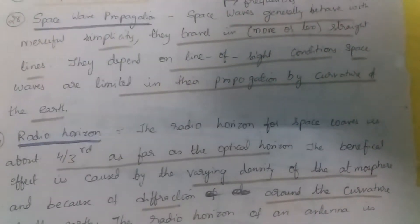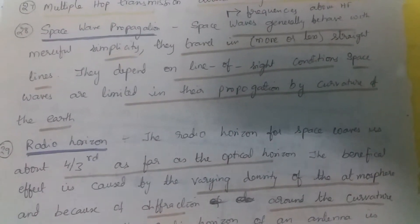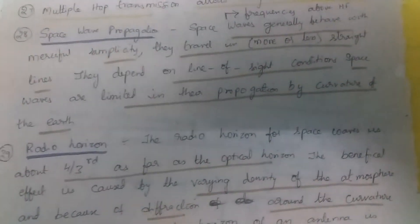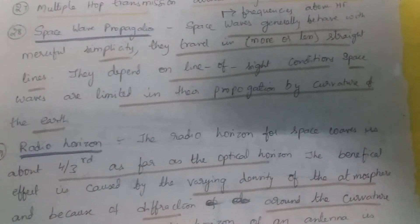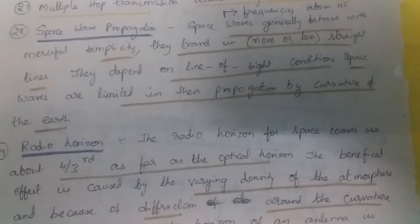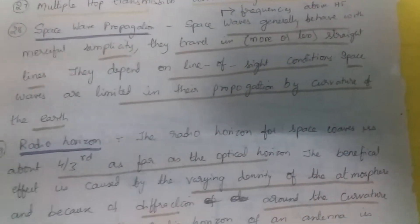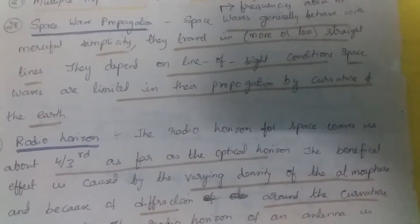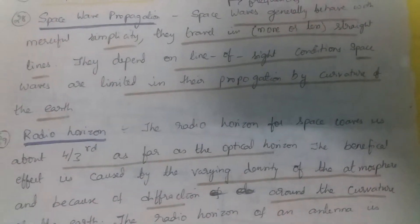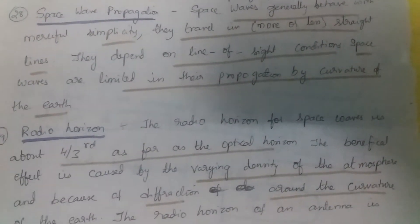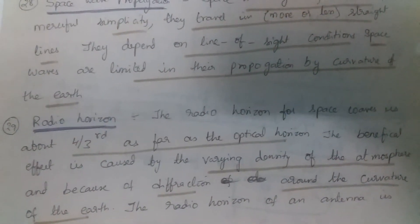Space waves are frequencies which are above high frequency, so they have very low wavelength. They travel in straight lines, and since they travel in straight lines, they depend on line-of-sight condition. Space waves are therefore limited in their propagation by the curvature of the Earth.